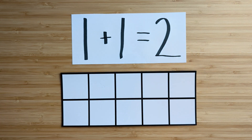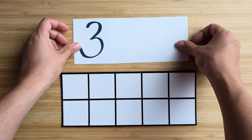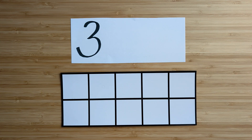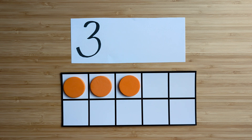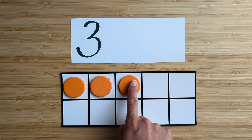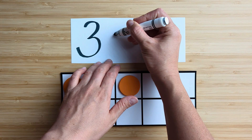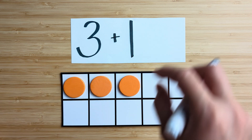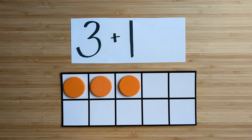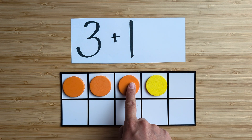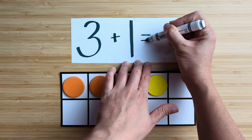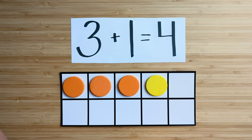Clear off your boards. Let's try another one. Make the number three. Point and count: one, two, three. What's one more than three? Point and count: one, two, three, four. Four is one more than three. Nice job.